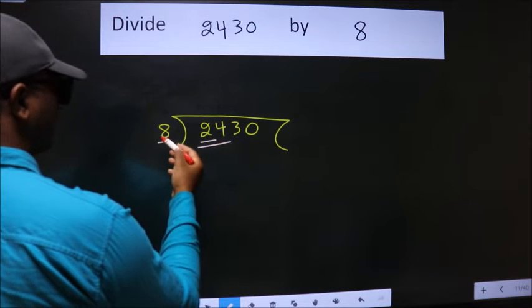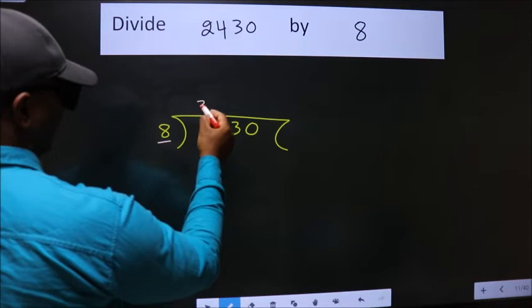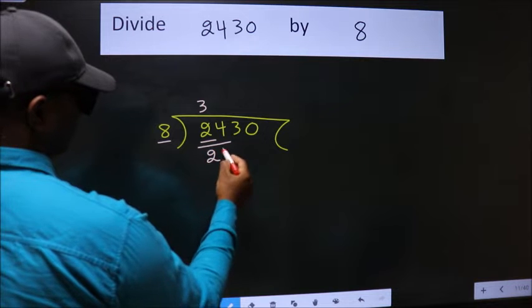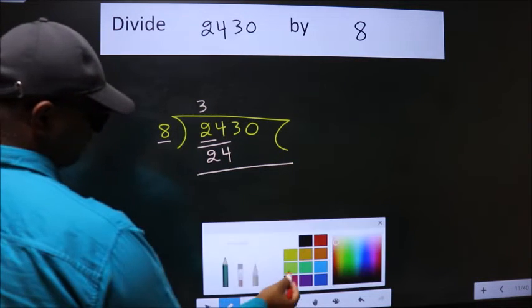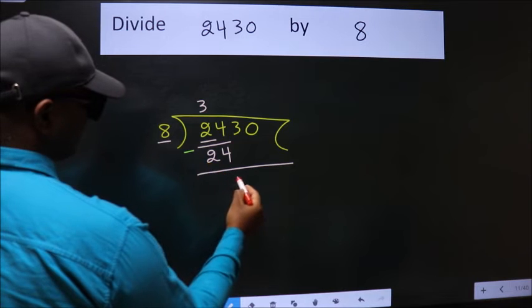When do we get 24 in 8 table? 8 threes, 24. Now we should subtract. We get 0.